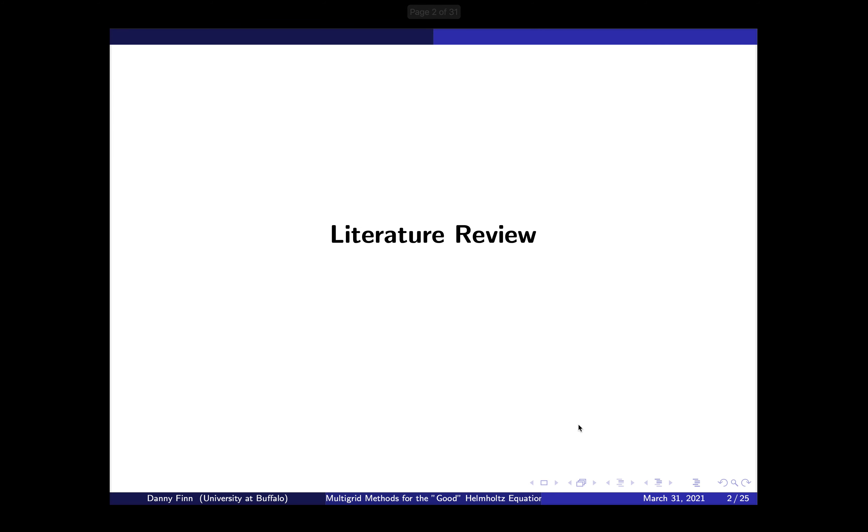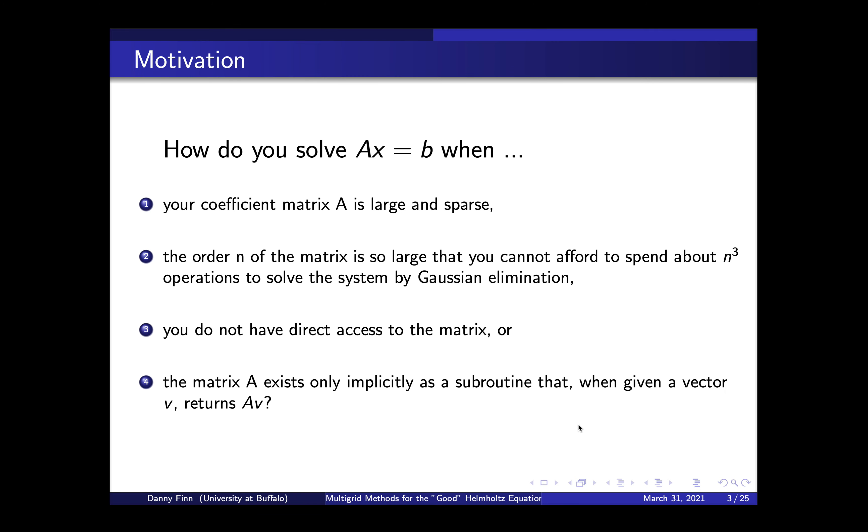So first, let's talk about a little bit of the literature review. We have some basic system of equations, a linear system AX equals B. Everyone knows this system. But consider how do we solve this when your coefficient matrix A is very large and very sparse, meaning there's a lot of zeros in the matrix and not a lot of actual numbers. What if the order N of the matrix is so large that we can't really afford something like Gaussian elimination, which is a complexity of N cubed? If N is going to be a million, then it's going to take forever to do N cubed operations.